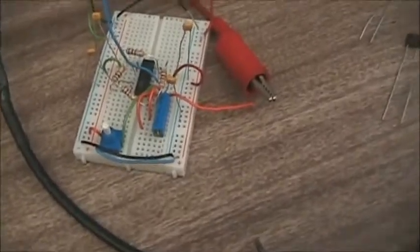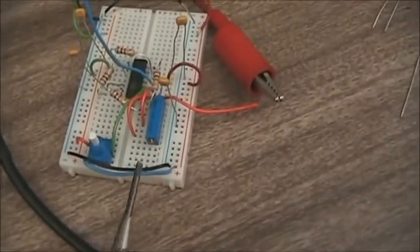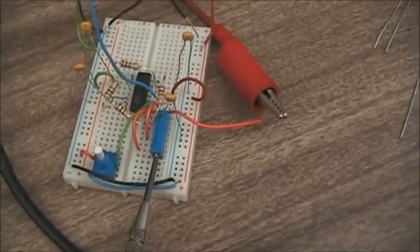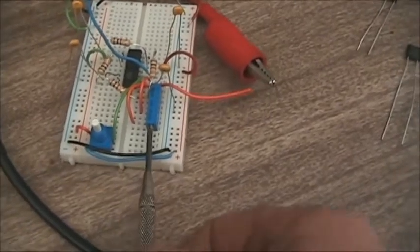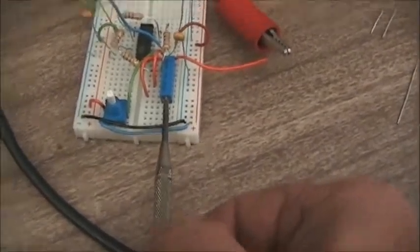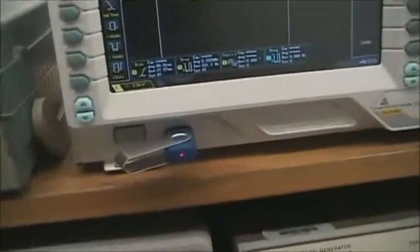The next step is to increase the gain of the op amp. I know that in my circuit, rotating the potentiometer to the left will increase the gain. So I'm going to do that as I monitor the scope.